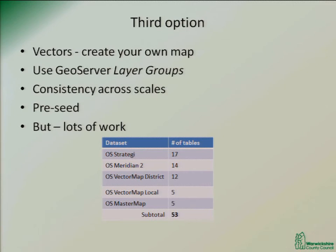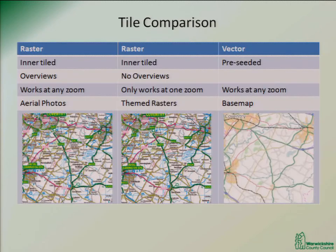When you're zoomed out, GeoServer is trying to load millions of features from Vector Map Local, Vector Map District, or even Meridian — which has probably a couple of million features. That is a lot of manual effort to create those layers, because you have to style them. In this case there are 53 tables and probably one to two hundred different styling rules.